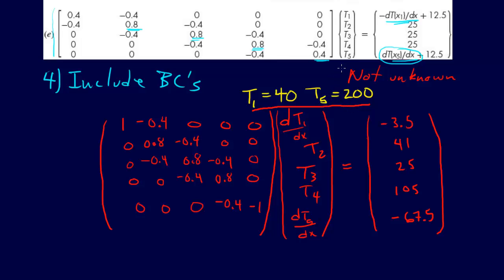So this is sort of a problem because T1 and T5 are represented as unknowns here, but they're not unknowns, they're actually knowns. And these DT/DX1 terms, these are the unknowns, right?